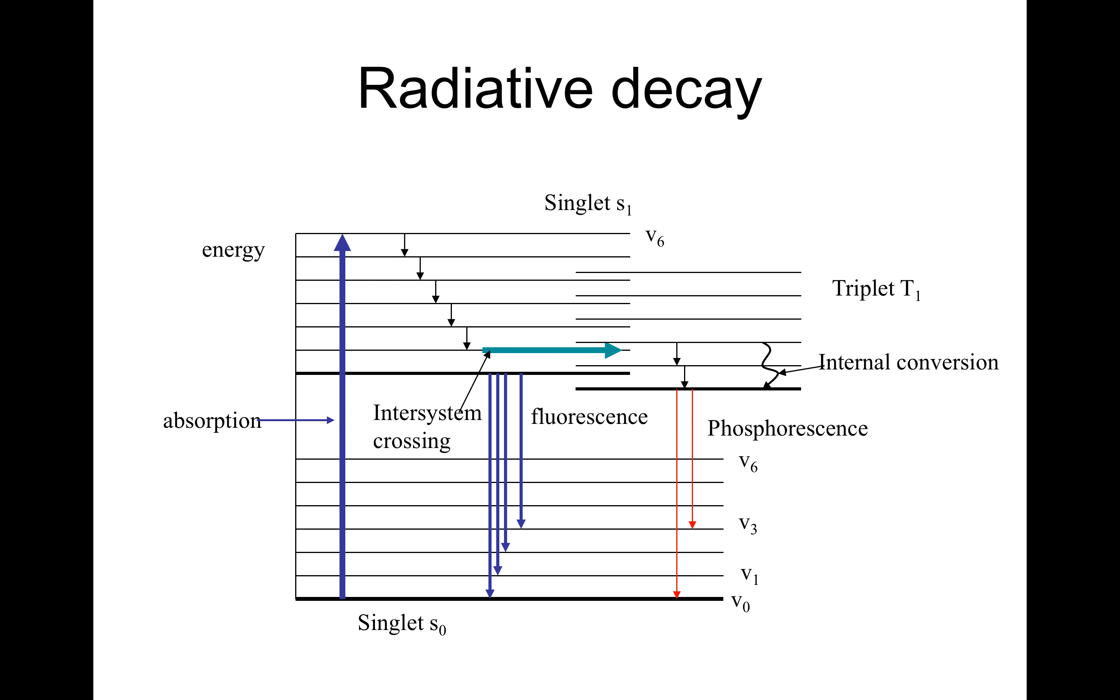On the other hand, we can again have absorption at singlet S0 and go to singlet S1 or S2 or S3. But during the leaking, we might have an inter-system crossover from the singlet system to the triplet system, which is slightly lower in energy.